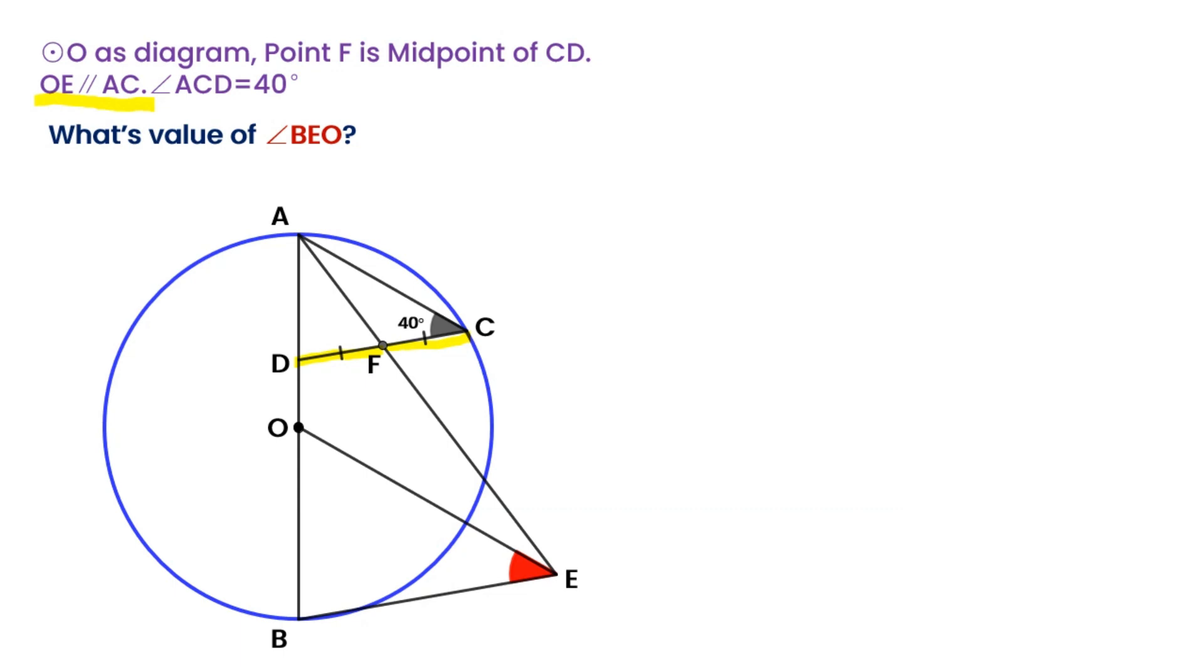So DF equals FC. Through point D, we make a parallel segment to AC that intersects AE at point G.